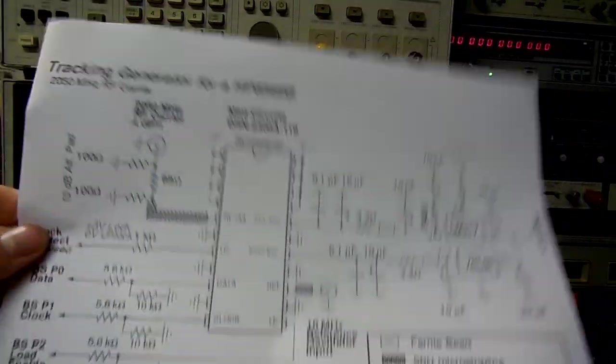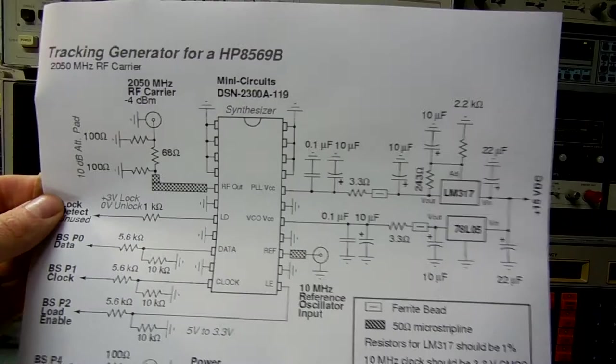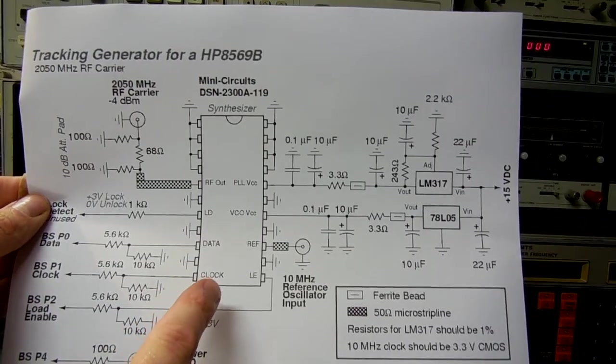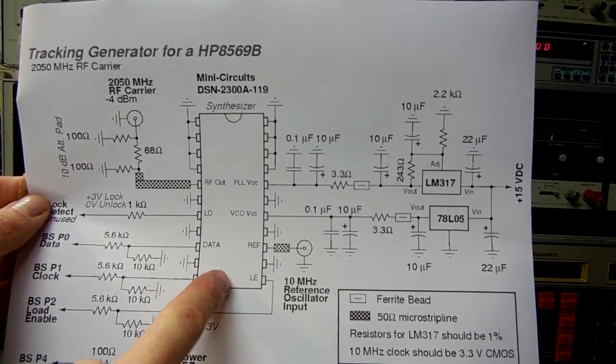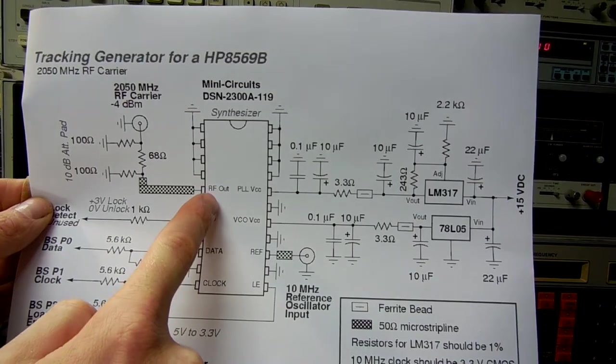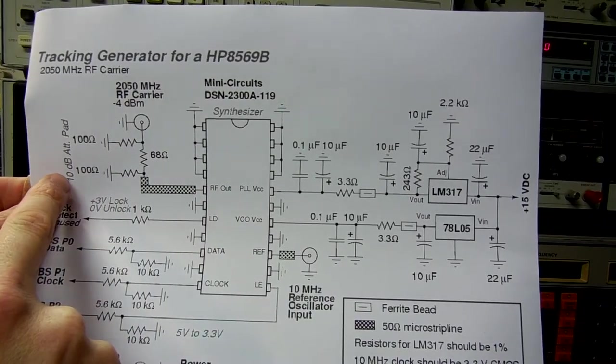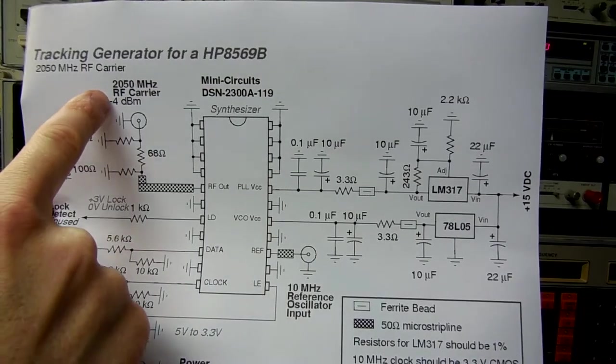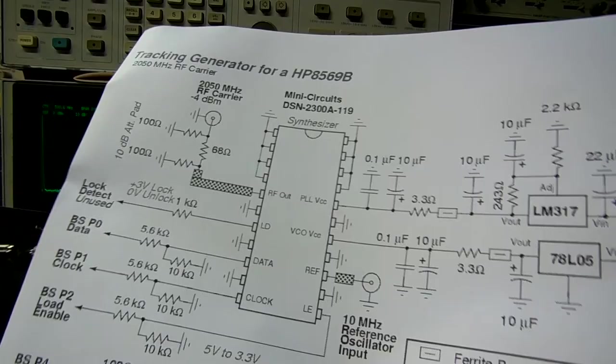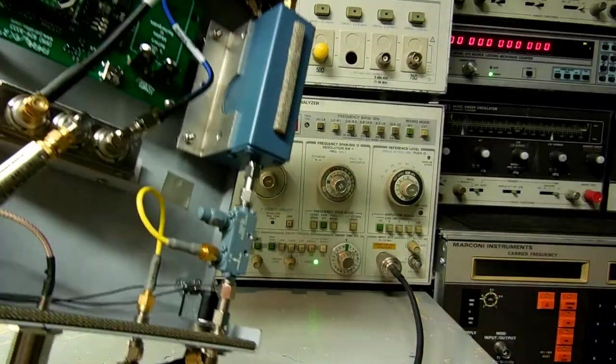Here's the schematic for the 2050 MHz carrier. It's just the Mini Circuits DSN2300A synthesizer. The output is around plus 6 dBm. So we add a 10 dB attenuator to knock it down to negative 4 dBm. That'll be the RF input on the mixer.